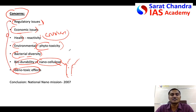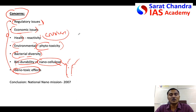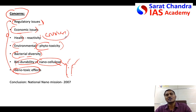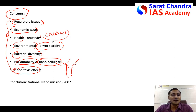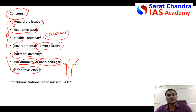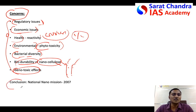If you do not know these specific concerns, you can write generally: nanotechnology, though important for increasing agricultural produce and food security, can have detrimental effects on plant health, soil health, health of agricultural workers, and water bodies. Don't write nonsense, but such general points can still earn you one or two marks.